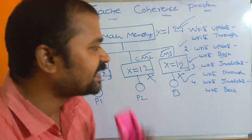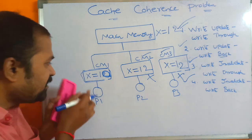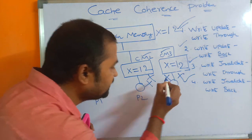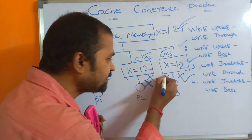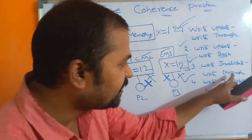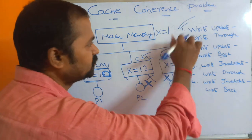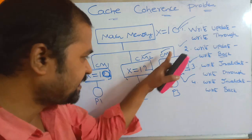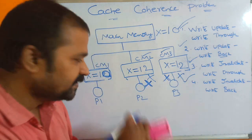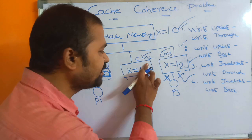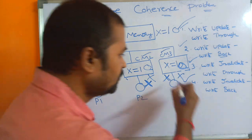The third approach is write invalidate + write through. Assume X is updated to 10 in one cache. Write invalidate means other caches are invalidated. Write through means the main memory is also updated to 10 in parallel. When cache memories CM2 and CM3 want to access X, they are invalidated, so they read from main memory where X = 10. Thus all caches and main memory have the same value — problem solved.